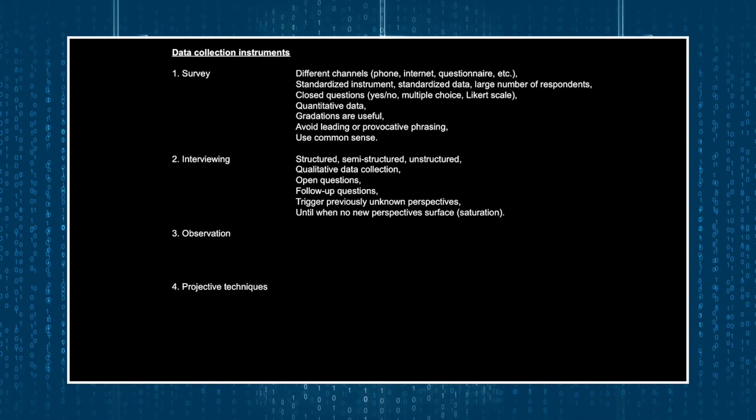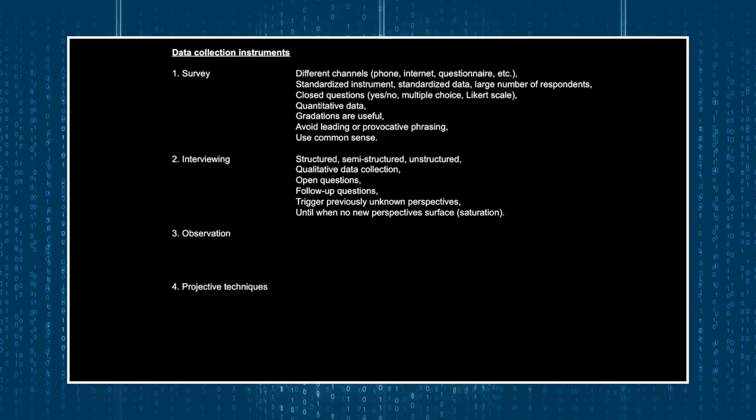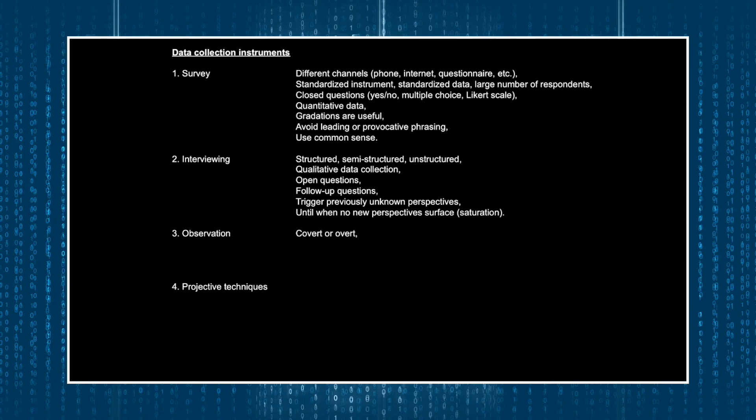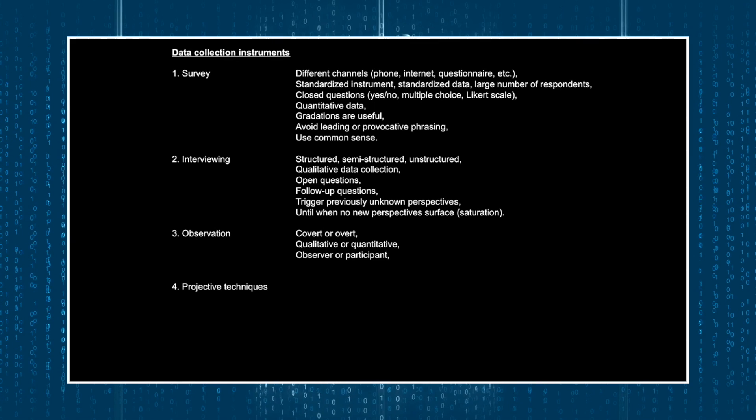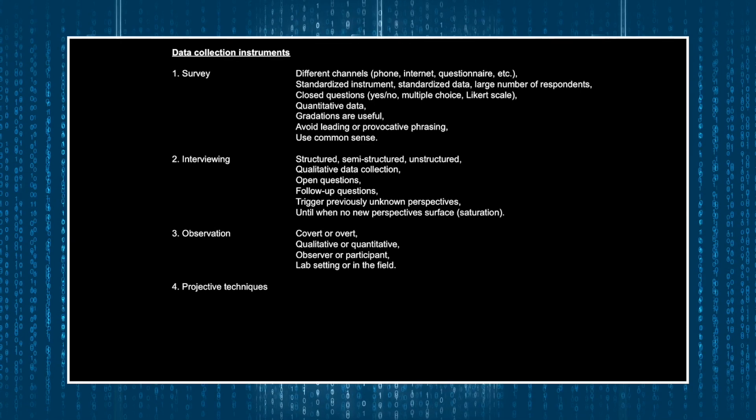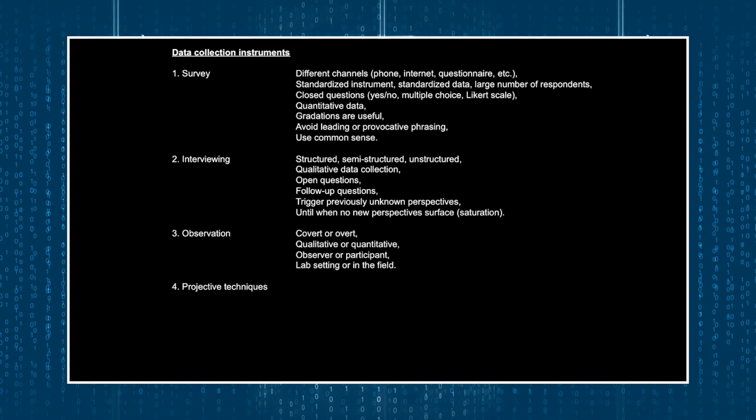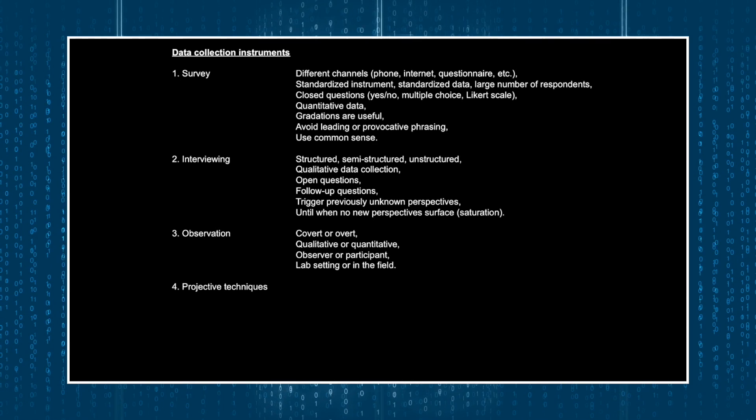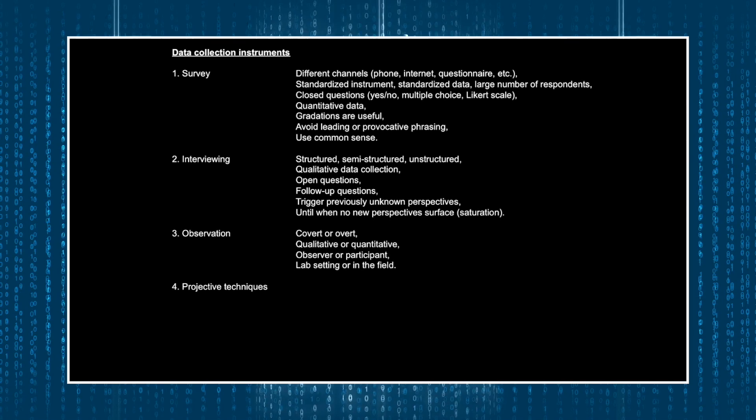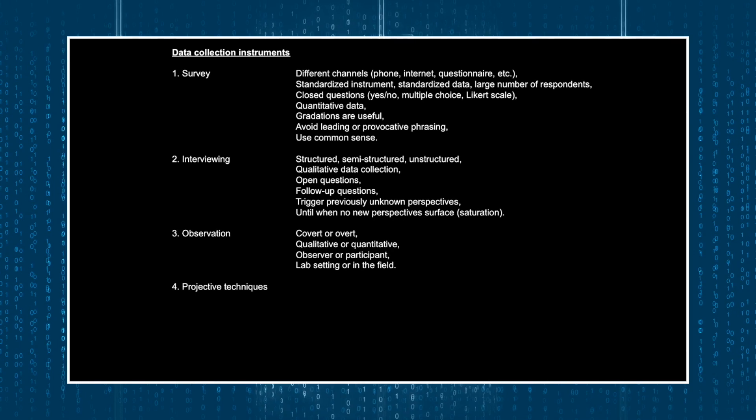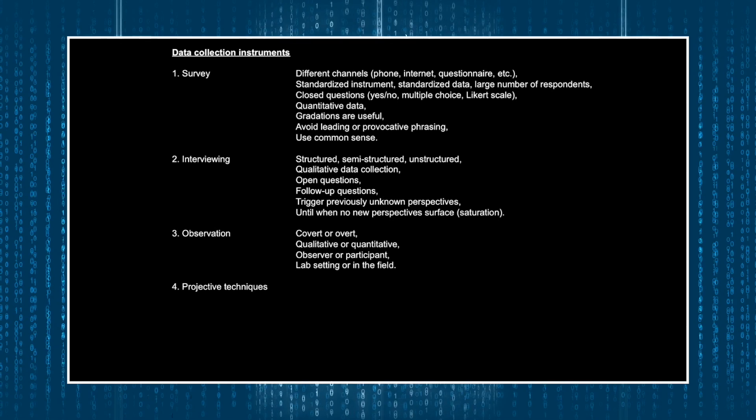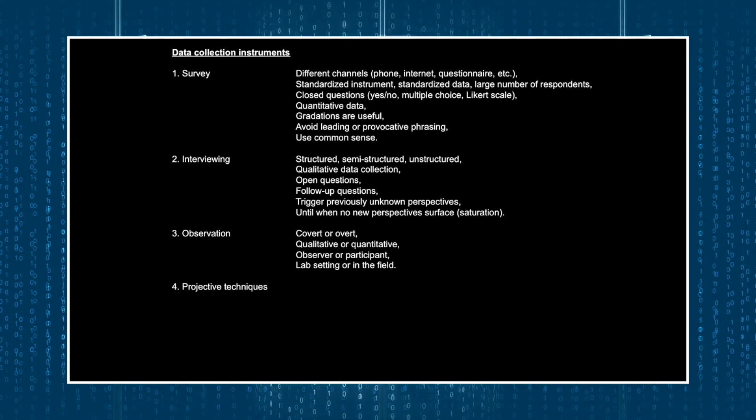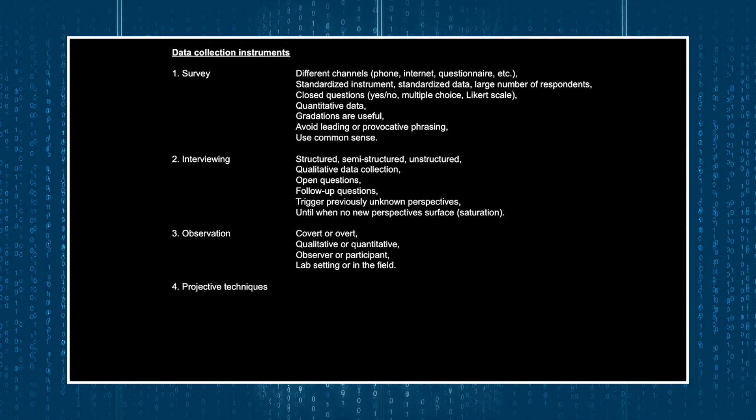The third data collection instrument that this chapter talks about is observation. Researchers can conduct observation in different manners: covert or overt, qualitative or quantitative, as a mere observer or as a participant, in a controlled lab setting or in the field. As the researchers typically conduct the observation themselves, they can easily determine how best the observation should be done in line with the specific objectives of a particular research study. As such, observation is quite a versatile data collection instrument which can be used in all research types: exploratory, descriptive, and causal.